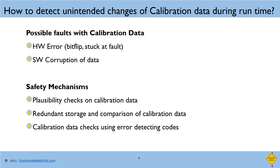To prevent or detect unintended changes to calibration data during runtime, different mechanisms can be implemented. Number one, a plausibility check or range check could be made on the calibration data, and if the data is implausible or out of range, a default value can be used instead. Number two, safety-related calibration data can be redundantly stored in different blocks or regions, and before every access a comparison can be made with the redundant copy; if there is a mismatch, a default value can be used or a safe state can be triggered.